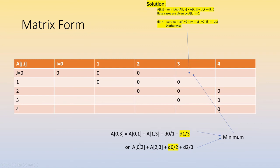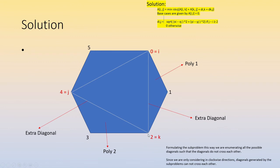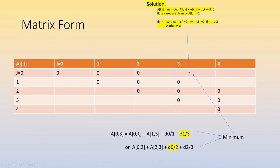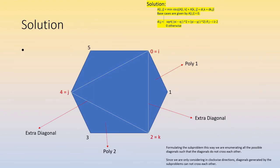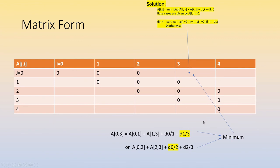Moving to the next diagonal, zero-to-three: we can place k at one or two. With k=1 we get diagonal one-to-three; with k=2 we get diagonal zero-to-two. We take the minimum of these and fill that cell. Similarly, we compute D[1][4] by trying k=2 and k=3. Using all these precomputed values we compute the final value from zero to four — which in this pentagon example gives us the final answer, read directly from that cell in the table.